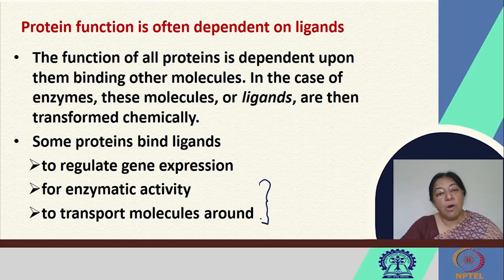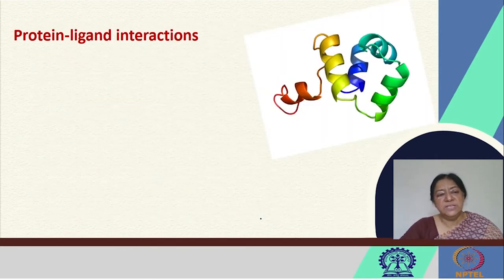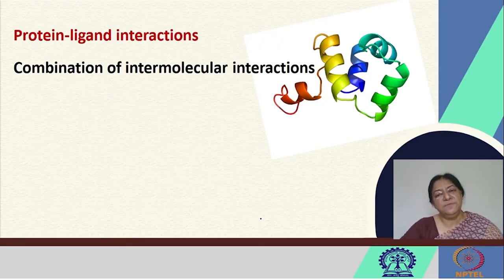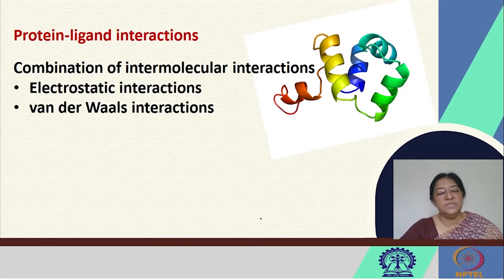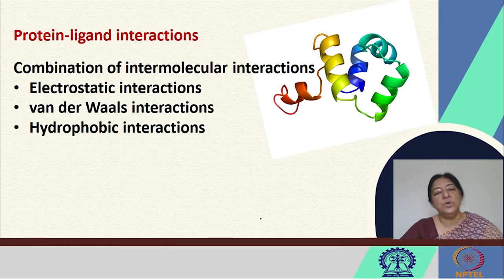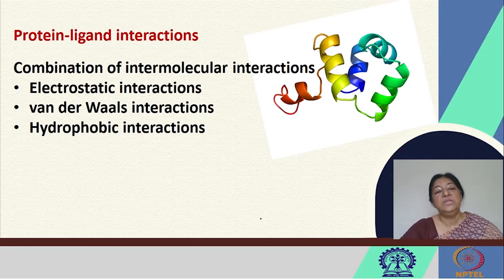Whether they are drug molecules, compounds transported from one region to another, or oxygen being bound by hemoglobin and myoglobin, protein-ligand interactions involve a combination of intermolecular interactions: geometric complementarity, chemical complementarity, electrostatic interactions, Van der Waals interactions, and hydrophobic interactions. We also looked at the equilibrium constant and the free energy of binding, and why spontaneous binding is needed for a protein-ligand interaction.